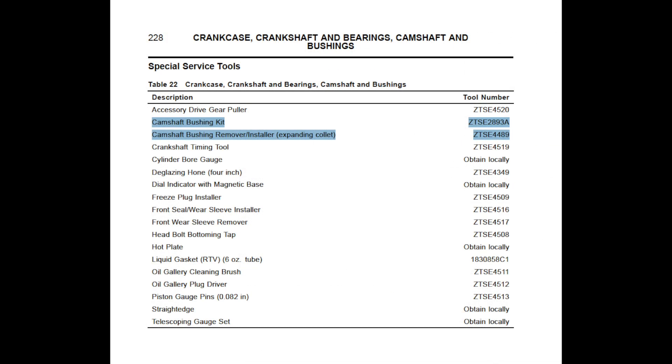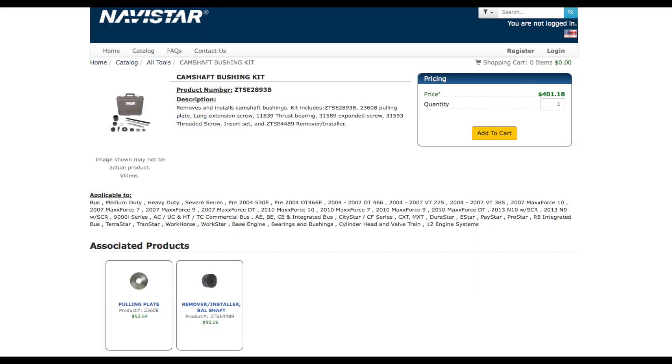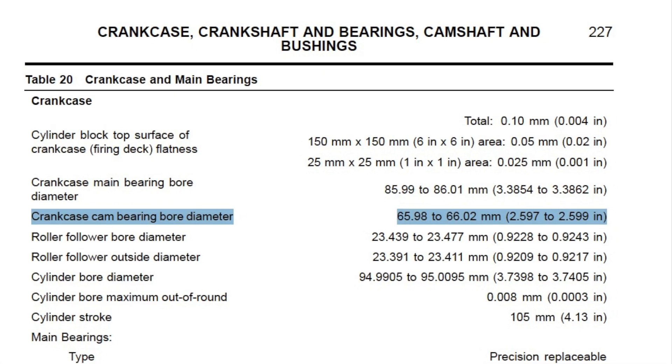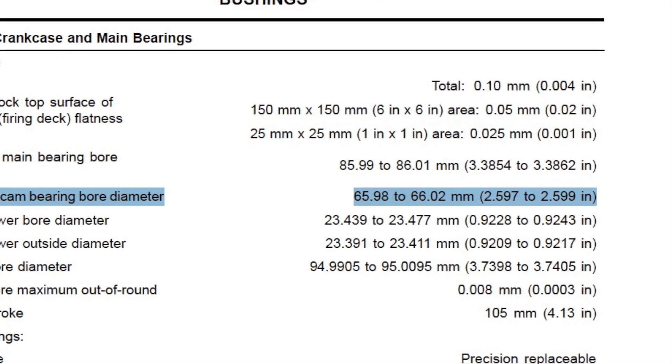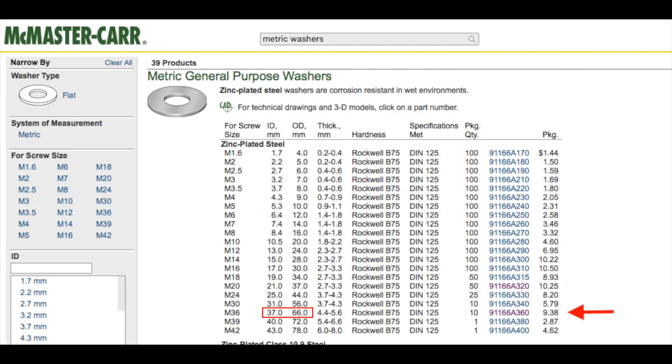And Navistar has a tool for this. It's an expensive tool. The kit I own doesn't have the 66mm size necessary for these. Going to McMaster's site, they have washers with 66mm outer diameter. But to use these with my 3/4 inch jack screw, I needed to make up the difference between the ID and my screw.